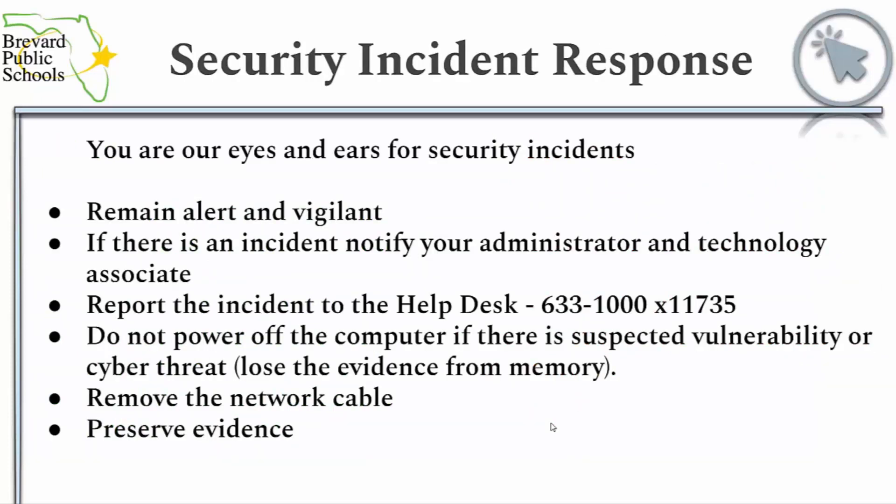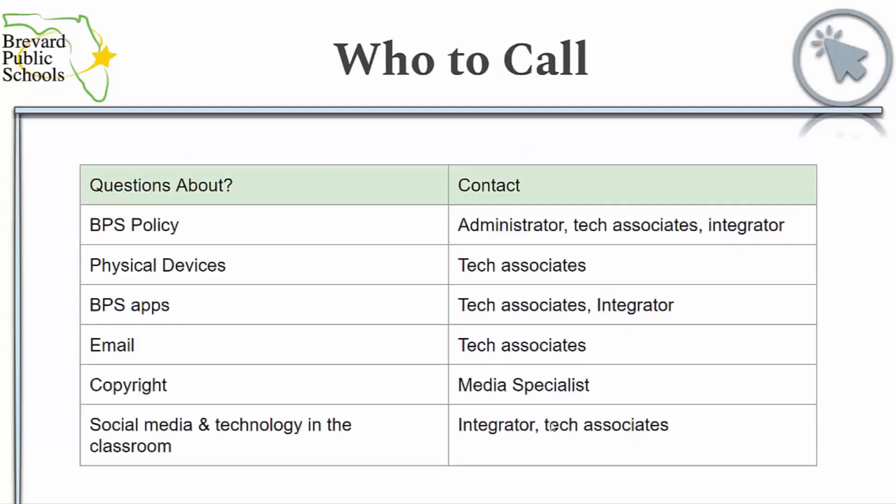You are our eyes and ears for security incidents. Remain alert and vigilant. If there is an incident, notify your administrator and technology associate. Report the incident to the help desk at extension 11735. Do not power off the computer if there is suspected vulnerability or cyber threat. Remove the network cable and preserve evidence. If you have questions, you can contact your tech associate or integrator.